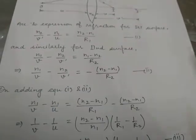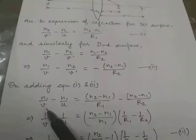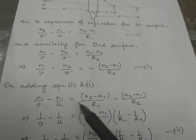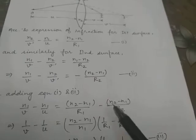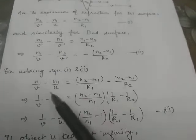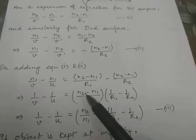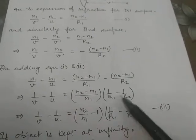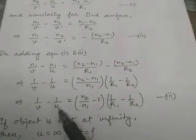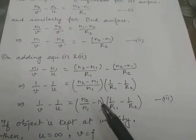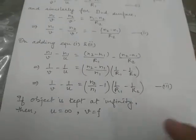On adding equation one and equation two, the N2/V' terms cancel out. So we get N1/V minus N1/U equals (N2 minus N1)/R1 minus (N2 minus N1)/R2. Taking N2 minus N1 as common on the right and N1 as common on the left, the next line becomes 1/V minus 1/U equals (N2 minus N1)/N1 times (1/R1 minus 1/R2), which further simplifies to 1/V minus 1/U equals (N2/N1 minus 1)(1/R1 minus 1/R2). Let this be equation number three.